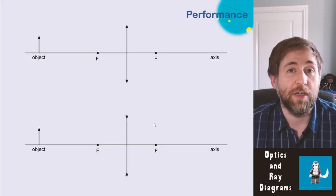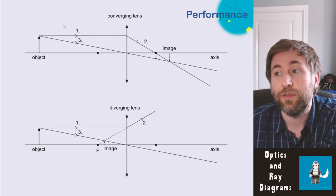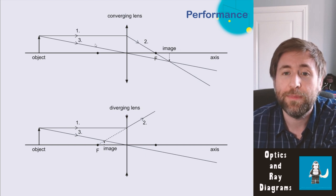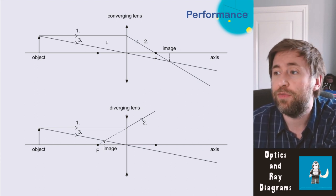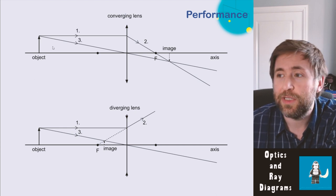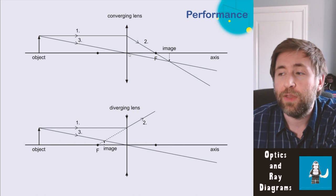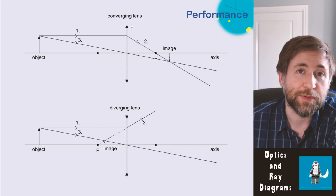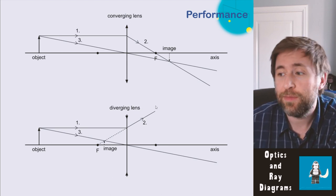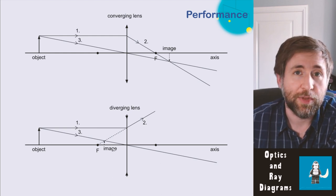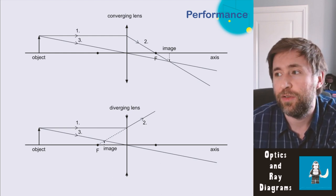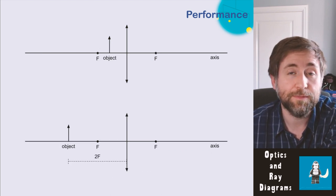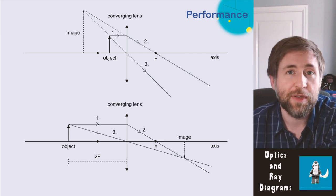In exam questions you just have to complete the ray diagram. Remember the simple method: step one, draw a ray parallel to the axis; step two, refract that ray through the focal point; step three, draw a ray through the optical center of the lens; step four, where those two lines cross is the top of the image. The type of image produced depends on whether it's a converging or diverging lens, how far the object is, and the focal length.